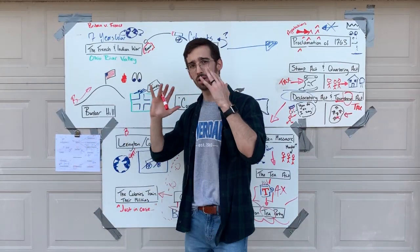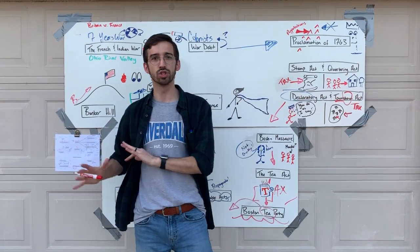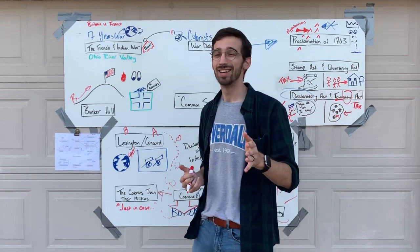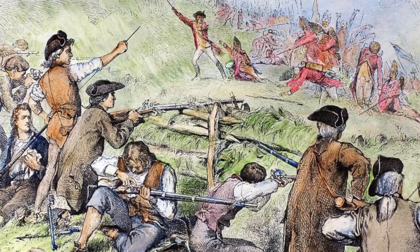An American commander said this because muskets at the time were incredibly inaccurate, and the Americans were low on ammunition — they couldn't fire forever. By waiting until the British were close enough to see the whites of their eyes, they could be sure of hitting their target. The British charge up the hill once — the Americans fire and the British retreat. They charge a second time — same result. The third time, it becomes clear the Americans are actually out of ammunition.